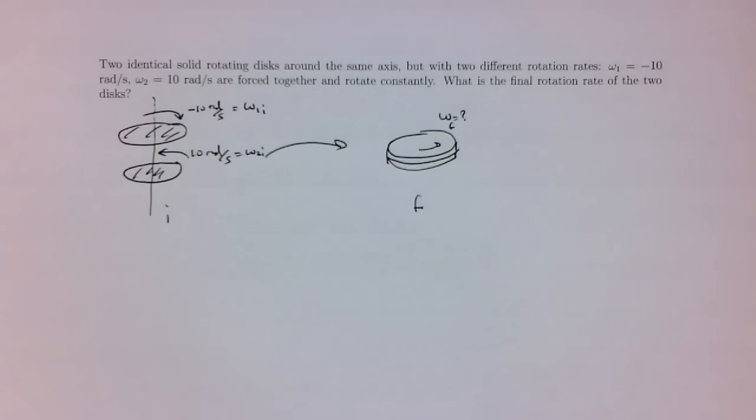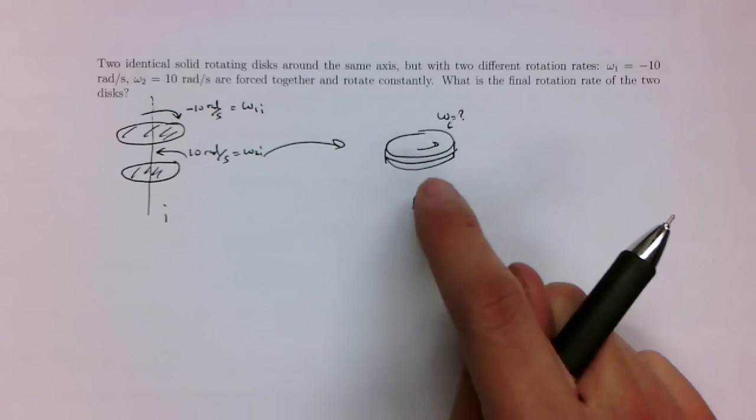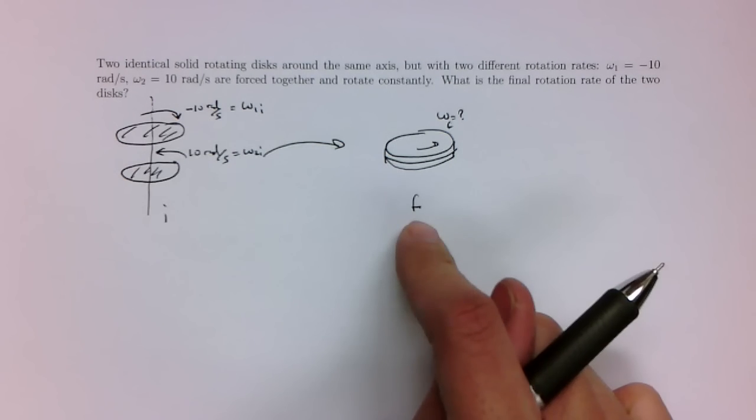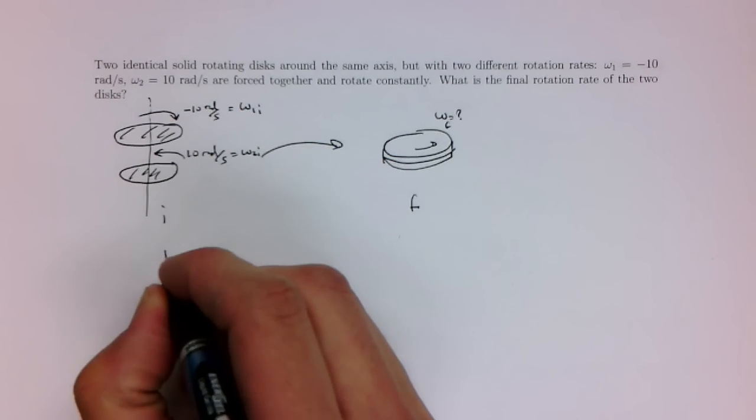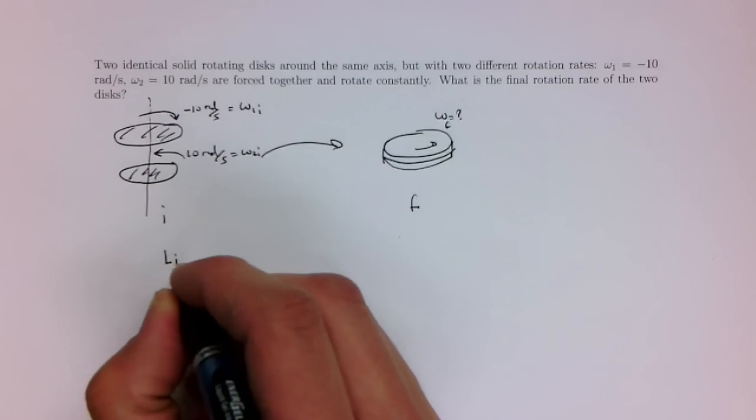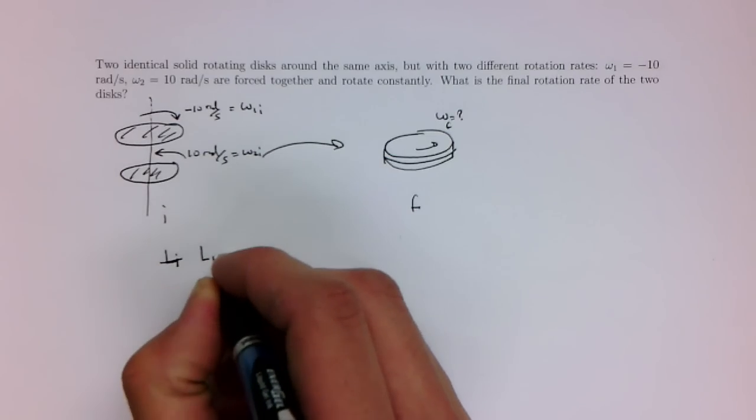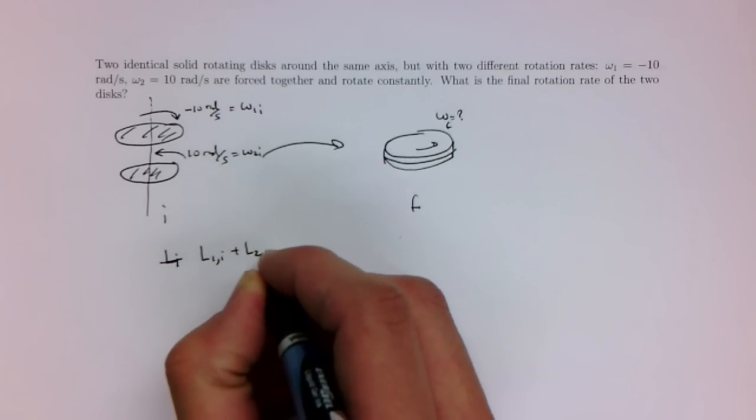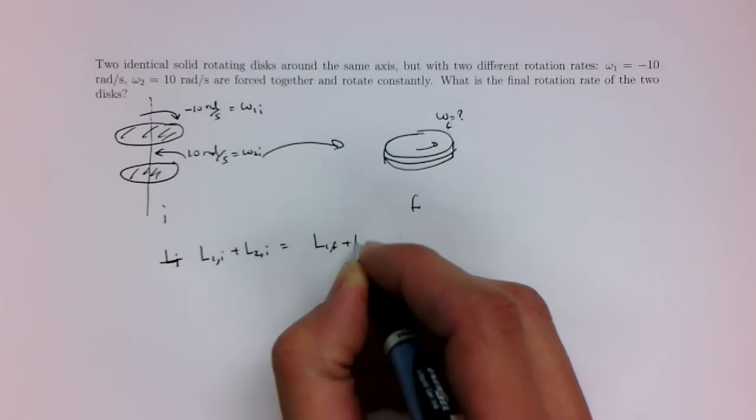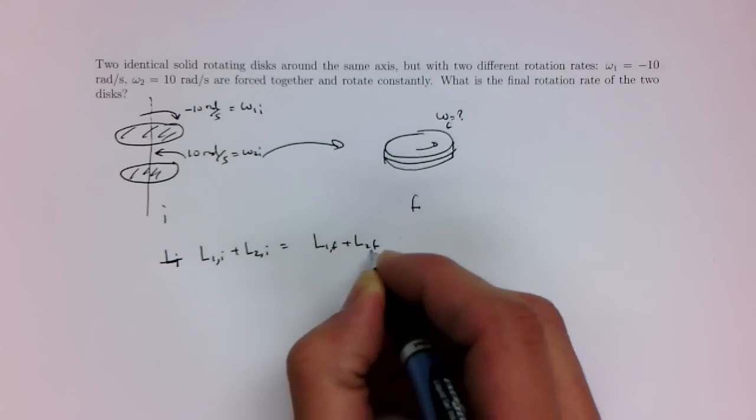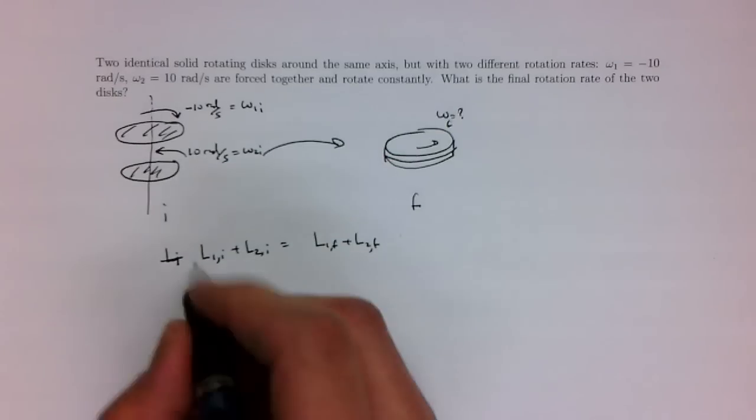Alright, okay. So, this is the initial position, final state. Let's write down the conservation momentum equation. L initial, L1, sorry. L1 initial plus L2 initial is equal to L1 final plus L2 final, where L is the angular momentum.